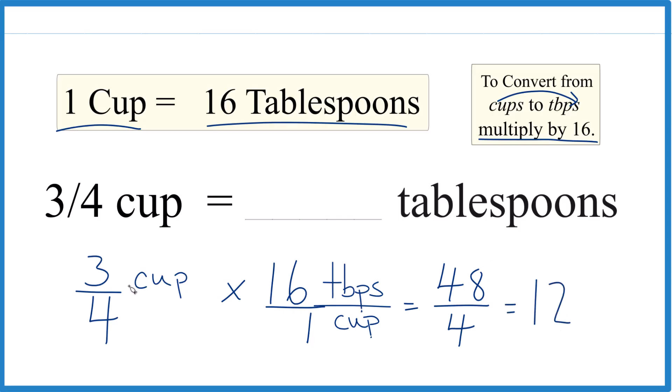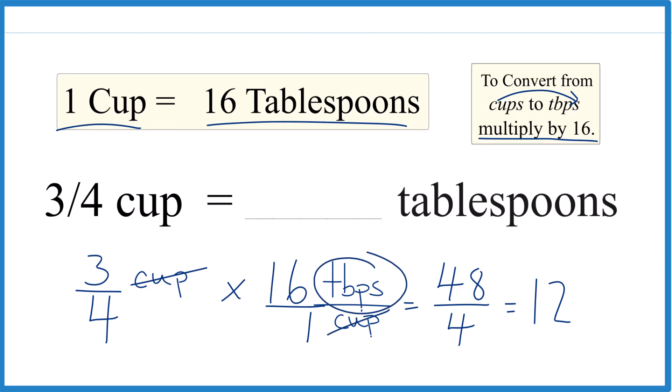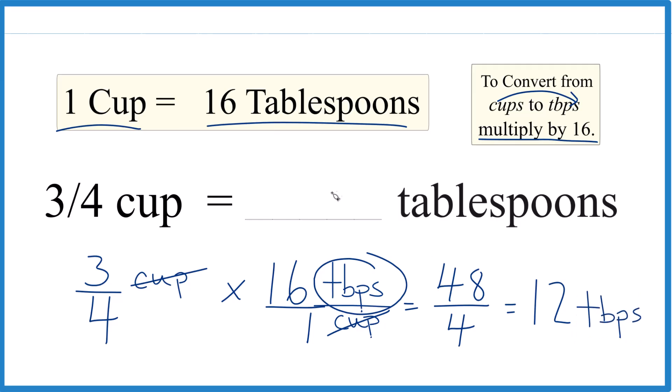Since we have cups in the numerator and denominator, they cancel out, leaving us with tablespoons. That's the unit we're looking for. There are 12 tablespoons in 3/4 of a cup.